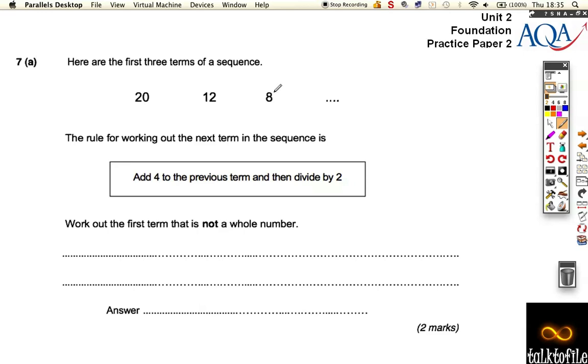So work out the first term that is not a whole number. So the next number after 8 is going to be add 2, which is 10, divide by 2. Sorry, add 4. Right, let's start again.